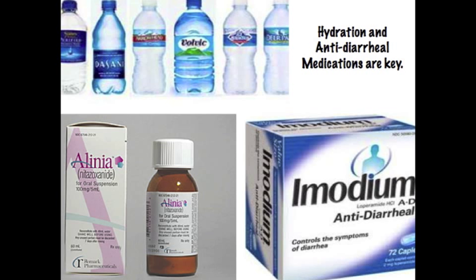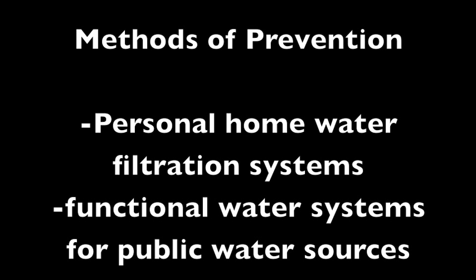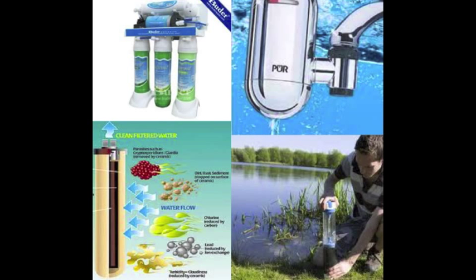Cryptosporidium parvum has only been a human pathogen since 1976, and in that time no antimicrobial treatment has been found. The only real treatment for immunocompetent patients is the use of anti-diarrheal medications such as ammonium and staying hydrated until symptoms subside. For this reason, the disease is still included in the World Health Organization's list of neglected diseases. The best form of treatment is prevention. Personal prevention consists of water filtration systems in the home, as well as functional water systems for public water sources. After an outbreak in Milwaukee, water districts created more rigorous turbidity tests which can effectively measure the levels of contamination of water supplies.